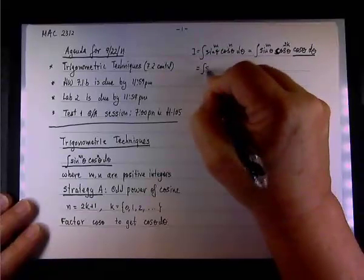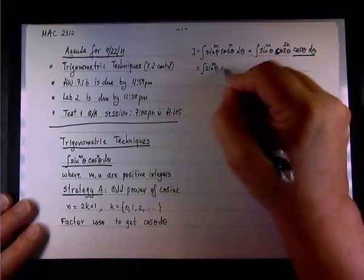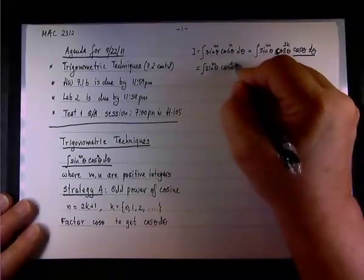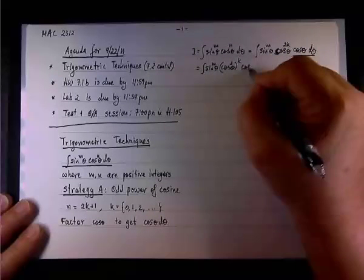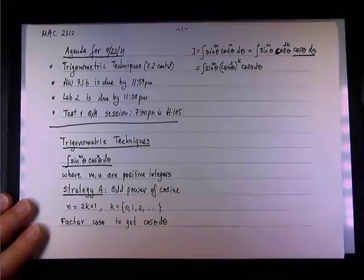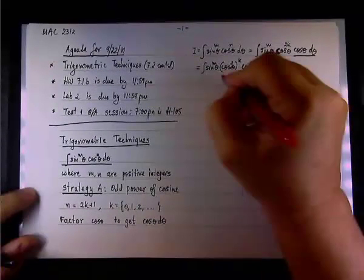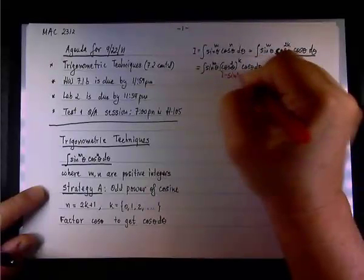So first, I'm going to write that nothing happened to the sine here throughout this exercise, but the cosine, I can write the cosine raised to the power of 2 theta as cosine squared raised to the kth power. And I recall that I have a nice substitution for the cosine squared, and that substitution is 1 minus sine squared.